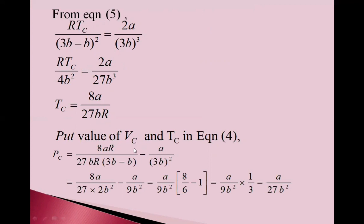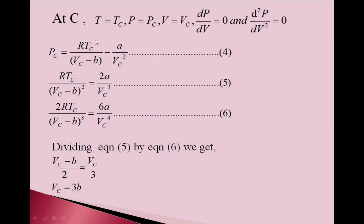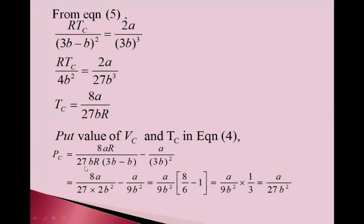Now, put value of Vc and Tc in equation 4. Here, in equation 4 value of Tc and Vc. So, we get Pc is equal to 8aR upon 27bR into 3b minus b minus a upon 3b square.